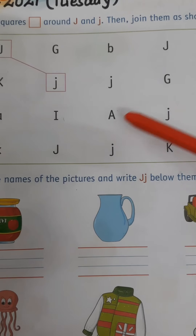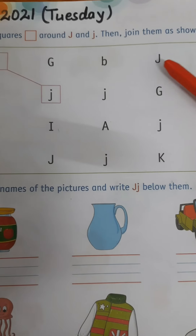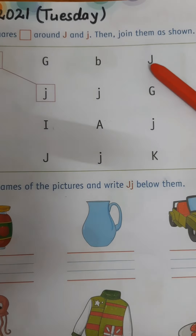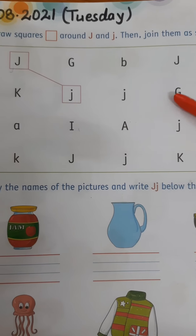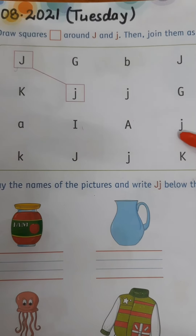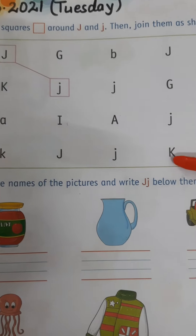So first we will find J. Look at this — this is capital J. This is small j. This is small j. This is small j.